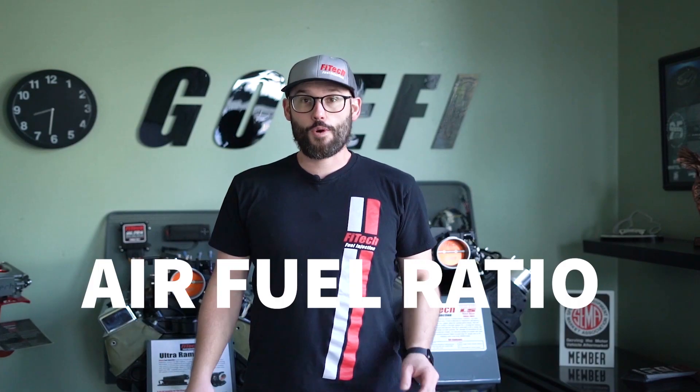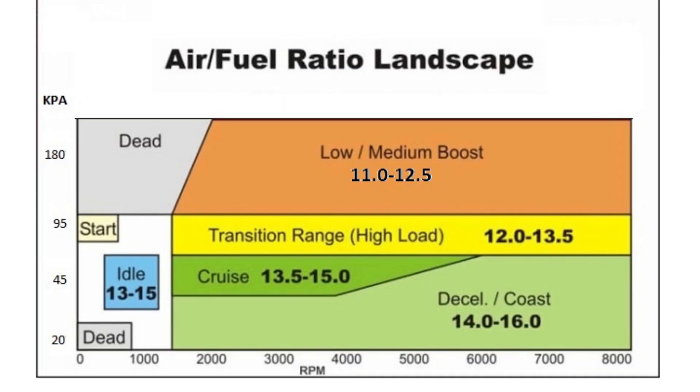AFR stands for air fuel ratio and is broken down as parts air to one part fuel. For example, 14.7 to 1 is 14.7 parts air to one part fuel. This happens to be a perfect clean burning air fuel ratio for gasoline, also known as stoichiometric.